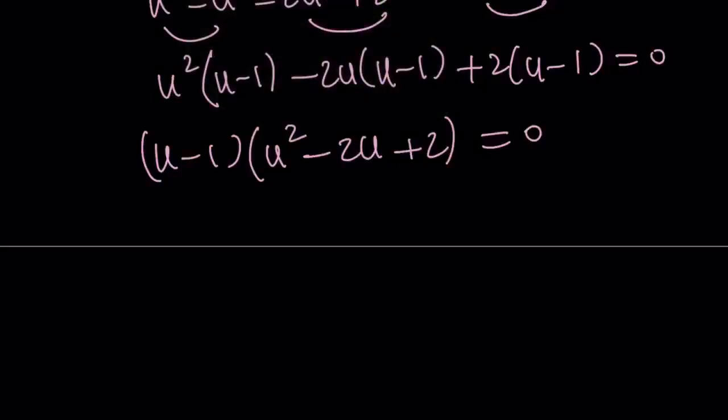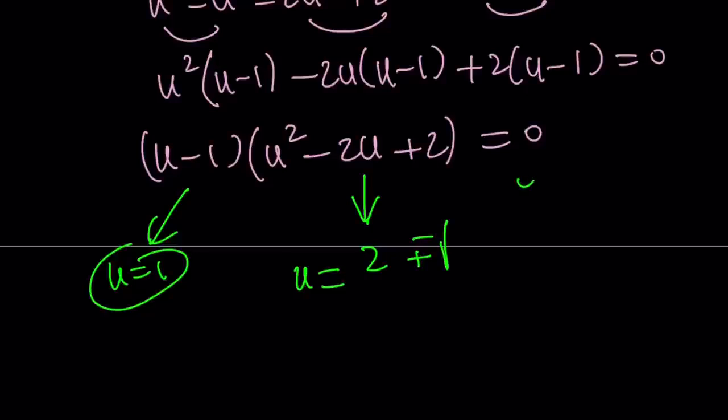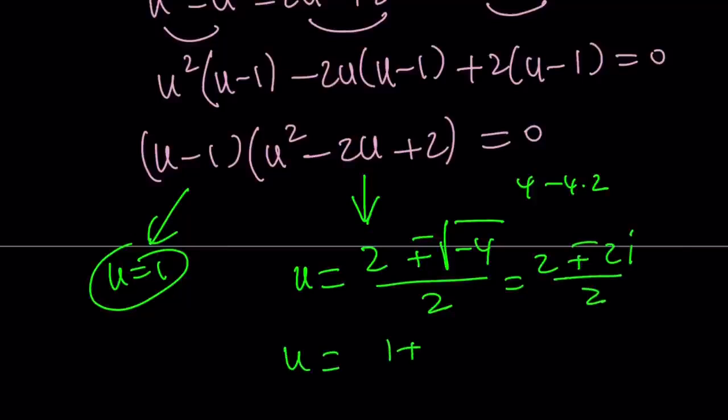So now we're going to do the following. We already know u equals 1 is a solution. We're going to find the other two solutions by using the quadratic formula. So quadratic formula gives us negative b plus minus the square root of b squared, which is 4, minus 4 times 2. And that is going to be 4, minus 8, which is negative 4. And the square root of negative 4 is just going to be plus minus 2i. So we can write this as 2 plus minus 2i over 2. And that is going to turn into 1 plus minus i.